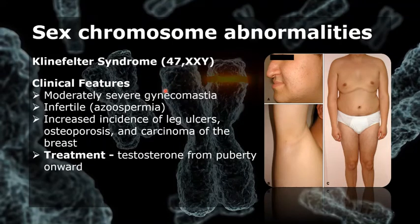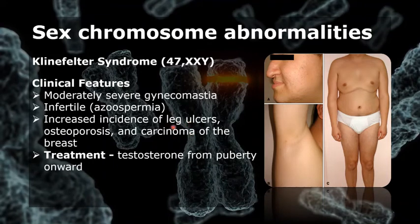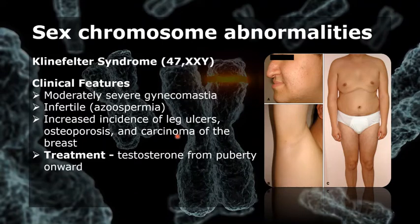All individuals with Klinefelter syndrome are infertile because of the absence of sperm in their semen, which is the azoospermia condition. They also have small soft testes and there is an increased incidence of leg ulcers, osteoporosis, and carcinoma of the breast in adult life. Treatment involves testosterone from puberty onward for development of secondary sexual characteristics and long-term prevention of osteoporosis.